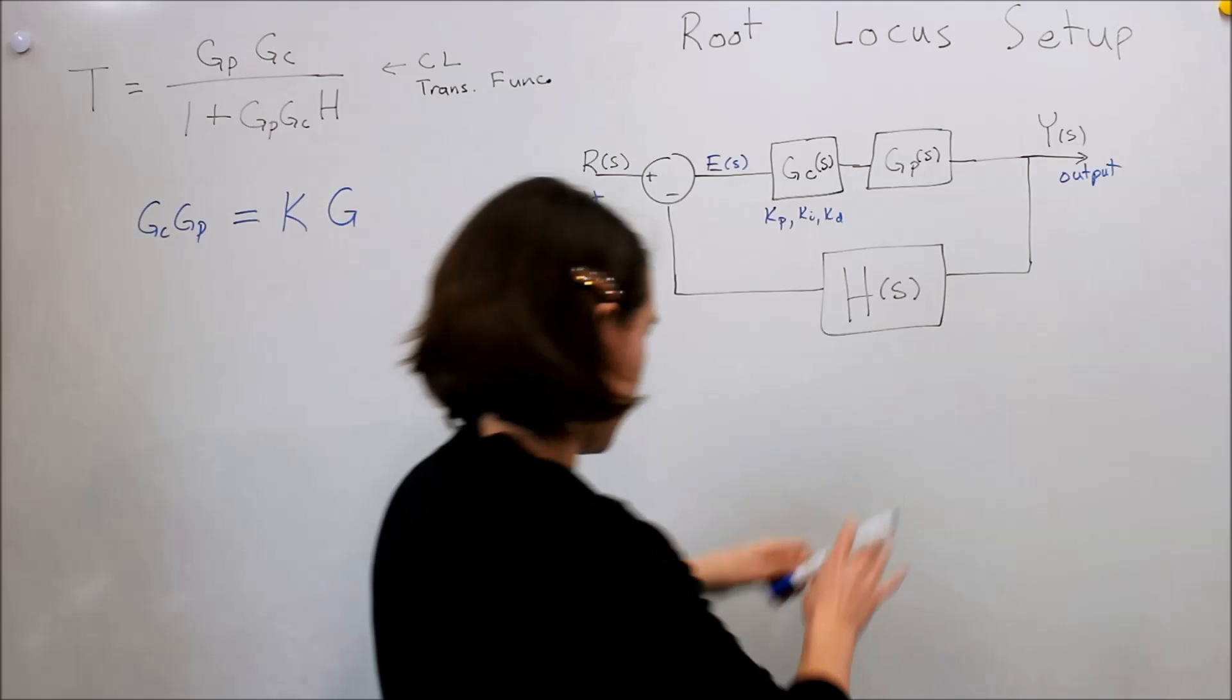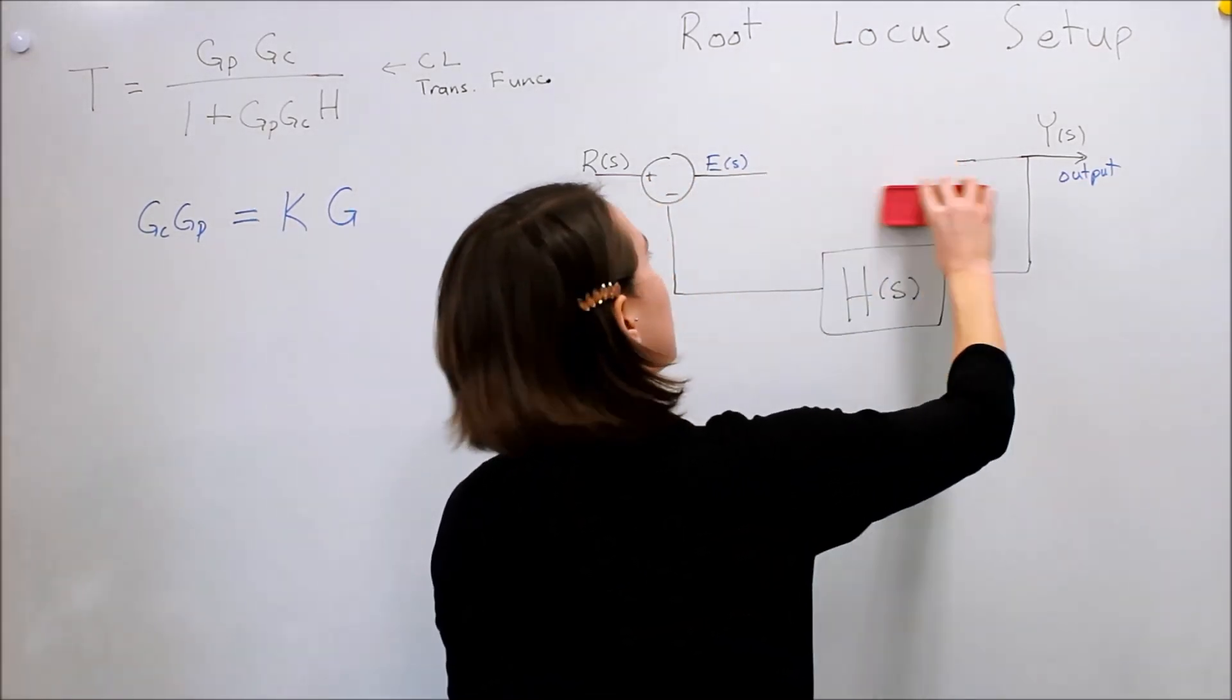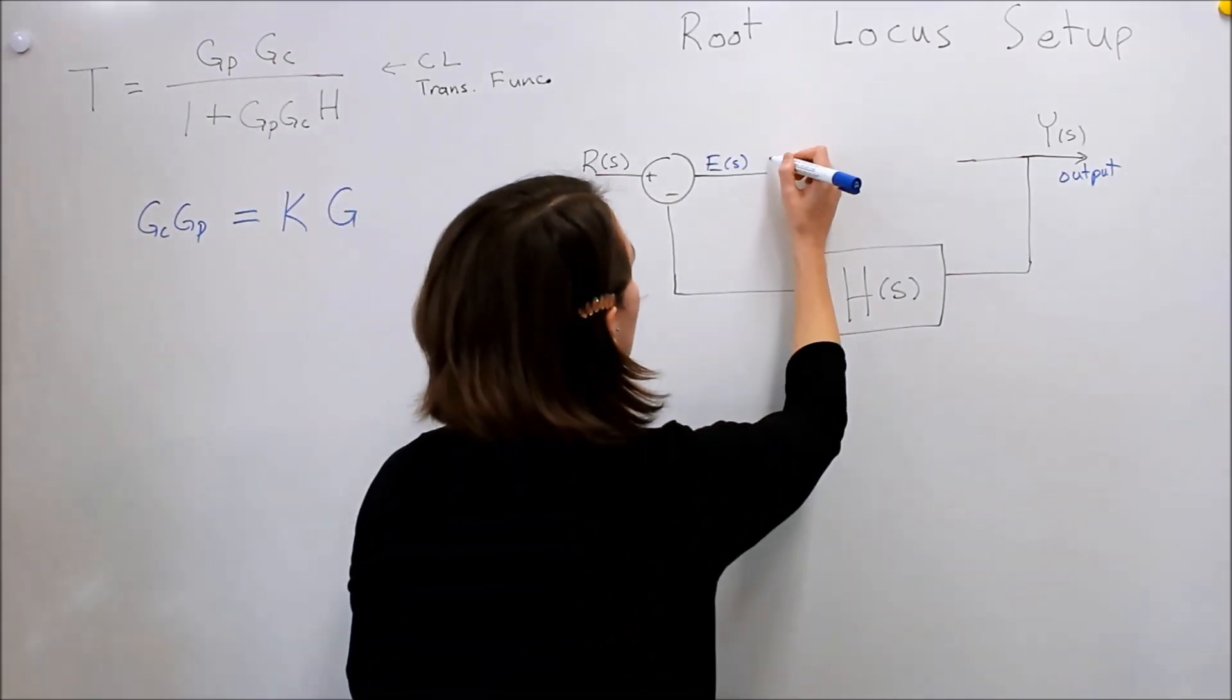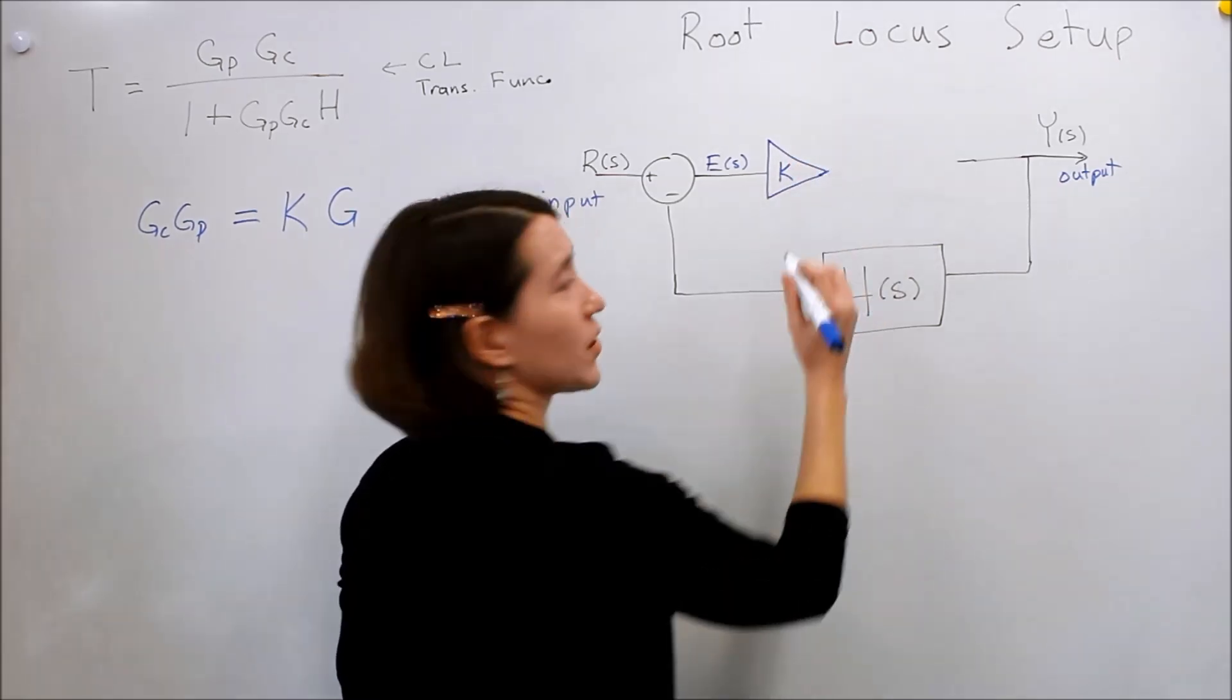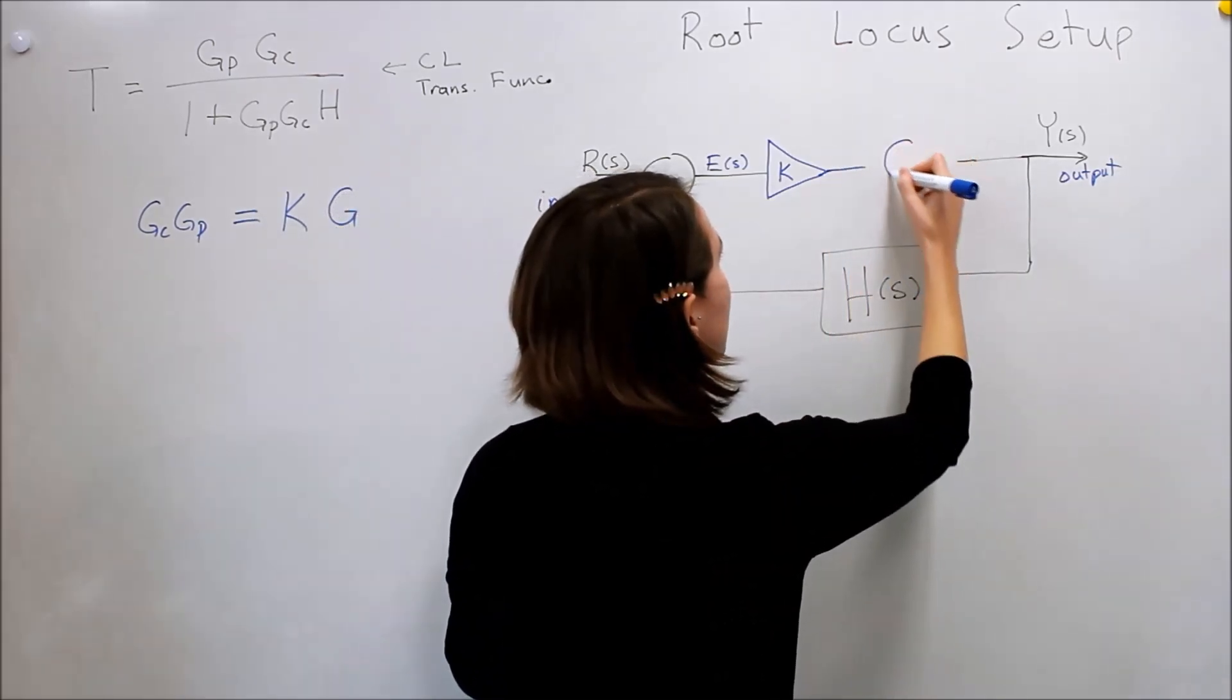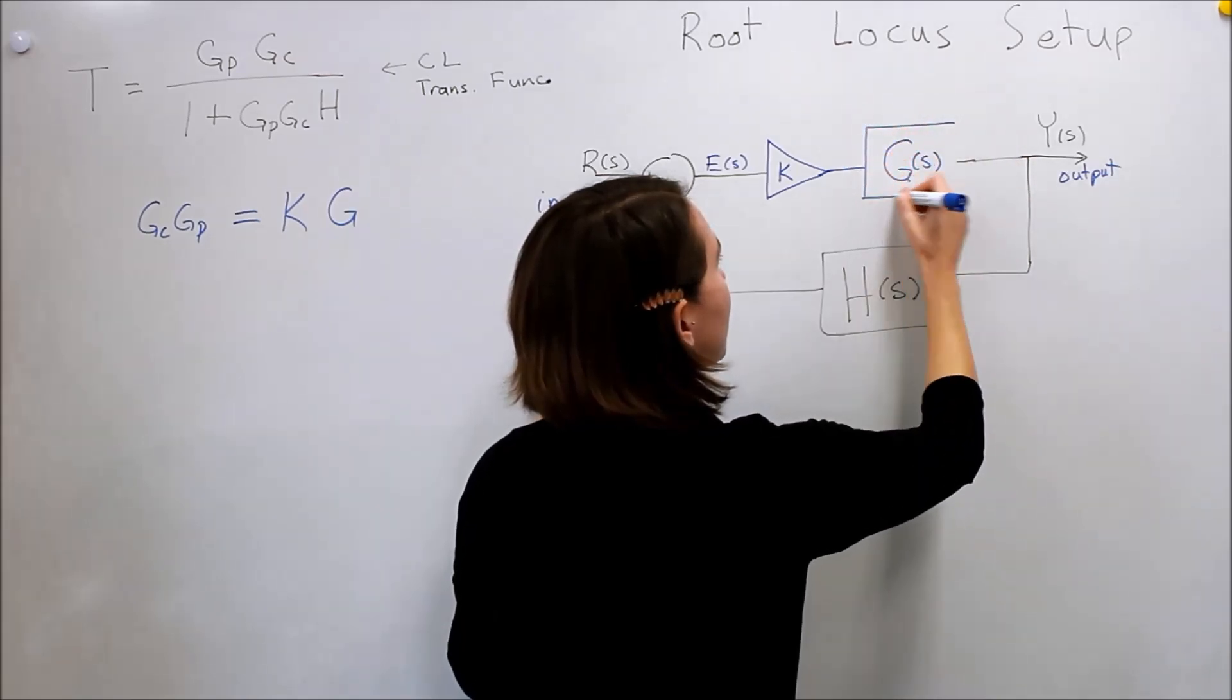So what that means here is that instead of having them as independent blocks, the controller and the plant, we're going to have one, we'll call it a gain, so we'll call it K here, this is our control variable, a scalar, and then we just have one general G, G of s, that is everything else lumped together.